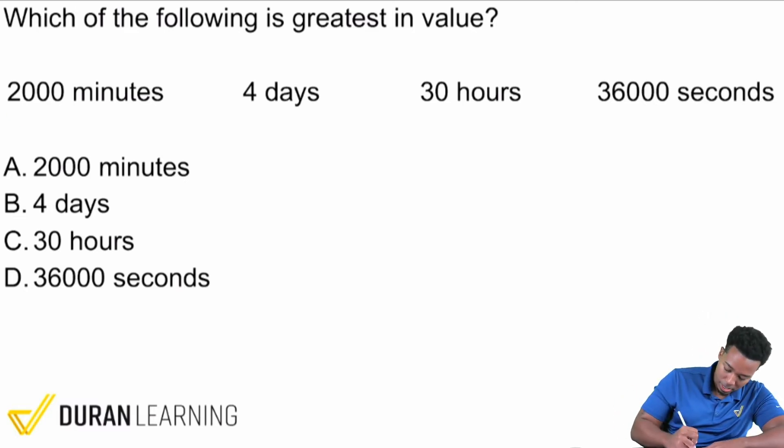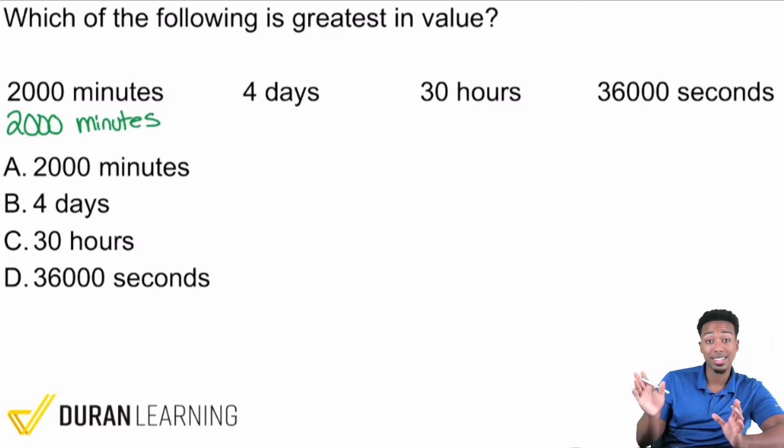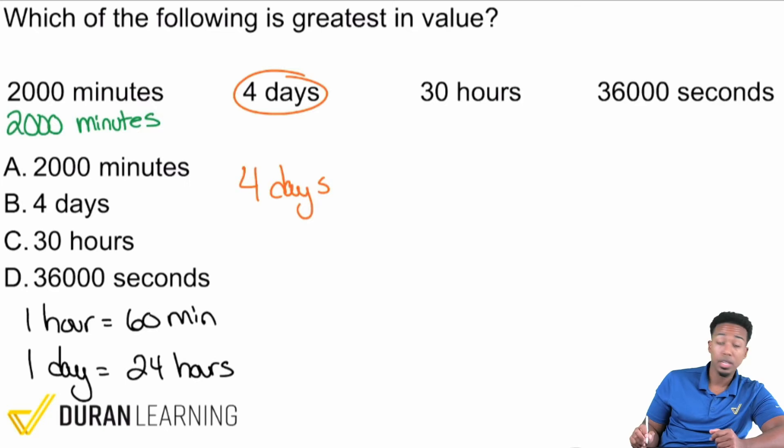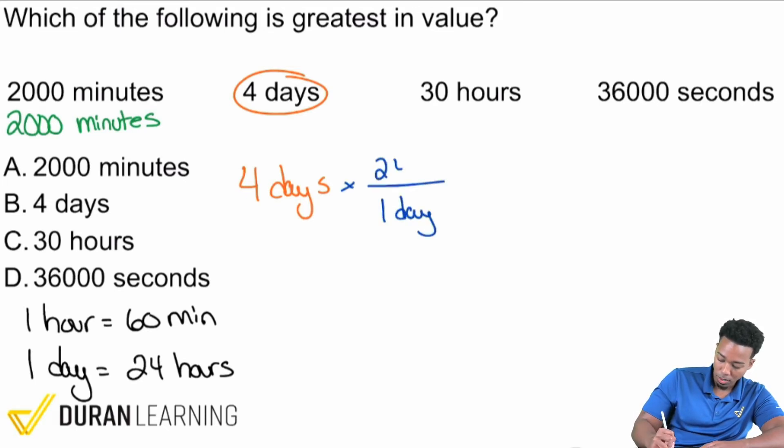So 2,000 minutes is gonna be 2,000 minutes, that's fine. We leave that as is. For days, to turn days into minutes, here's what we do. For days we'll use the conversion factor: one day equals 24 hours. You got to know this, you got to memorize this. The other one: one hour equals 60 minutes. You have to know that as well.